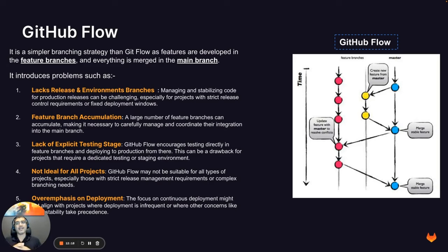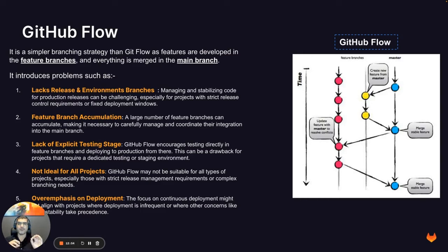However, GitHub Flow also introduces a different set of challenges. The first is the lack of release and environment branches. In this strategy we've removed them entirely—all integration testing happens directly in the main branch. As a developer, you'll be very reluctant to merge your changes into the main branch unless you're confident they're healthy and ready to be deployed to production, because your change goes straight to master and can then be deployed to production.